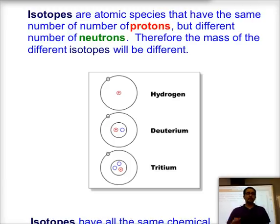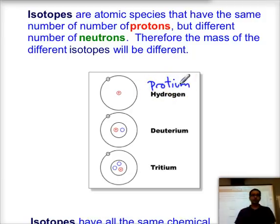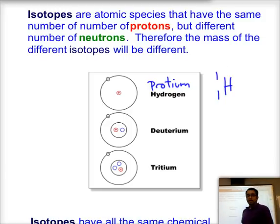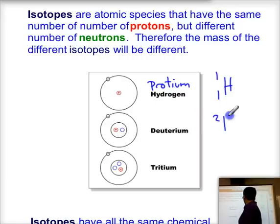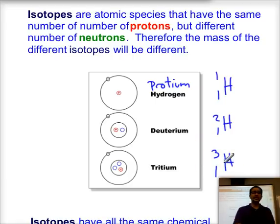Here we can see the isotopes of hydrogen. The first is called protium: it has one proton and no neutrons, so its mass number is one. The second isotope, deuterium, has one proton plus one neutron — two nuclear particles — giving it a mass number of two. The third isotope, tritium, has one proton and two neutrons, so three nuclear particles and a mass number of three. All three isotopes have one electron and therefore a charge of zero.